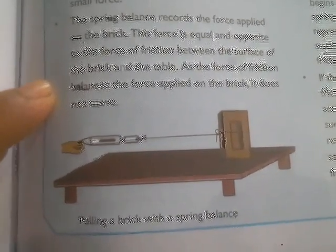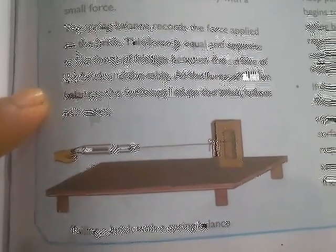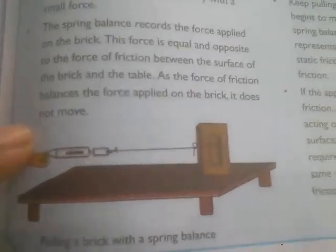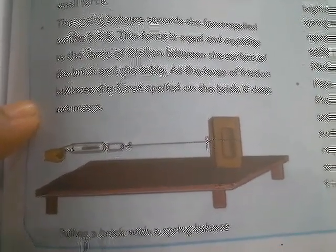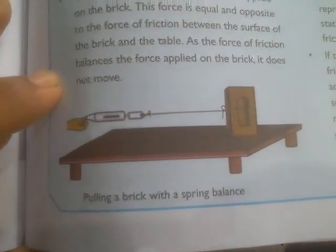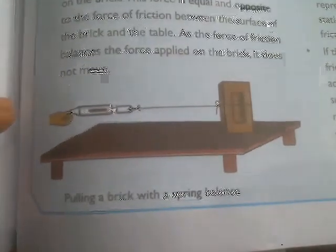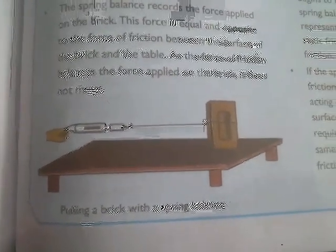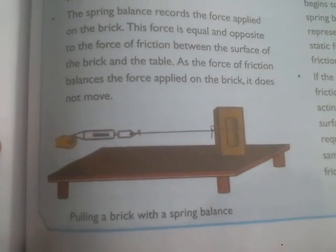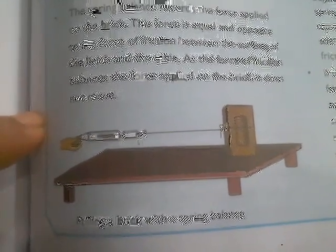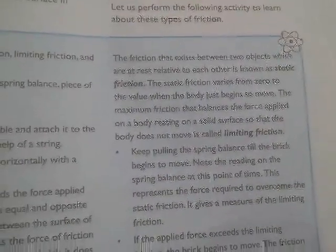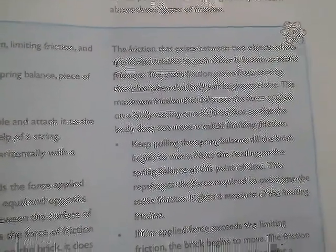Slowly we try pulling the spring balance, and after some time the brick will begin to move. The maximum point where the brick is just barely unable to move — that last point — is where the friction between the brick and the board is known as limiting friction. It can also be considered as the highest limit of friction; beyond that point, the brick will slowly move.